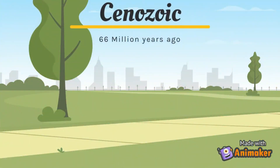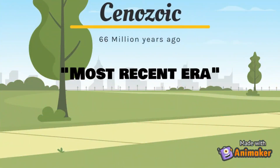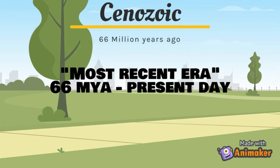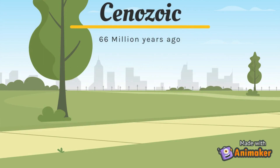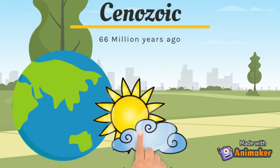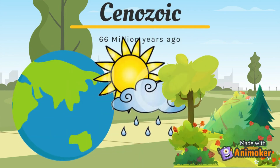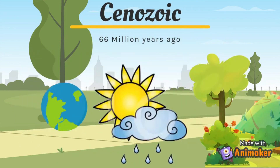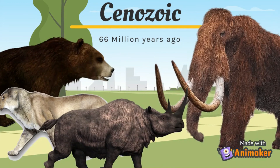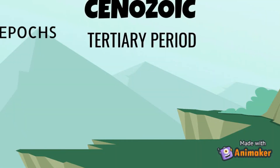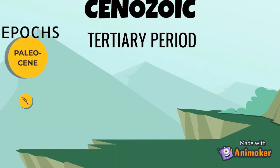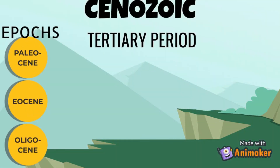The last is the Cenozoic era, the most recent era. It extends from 66 million years ago to the present day. The Earth's climate was hot and humid with lush forests at the poles. Woolly mammoths were born in this era. The Tertiary period covers the Paleocene, Eocene, and Oligocene epochs.